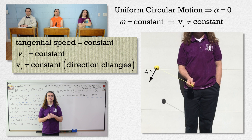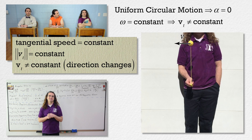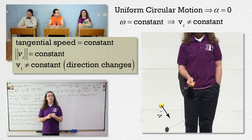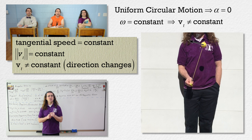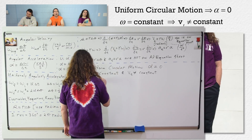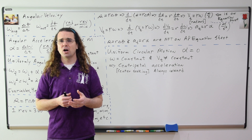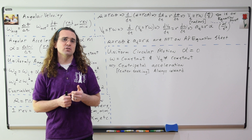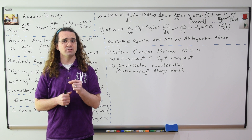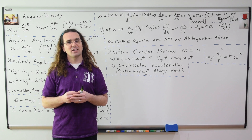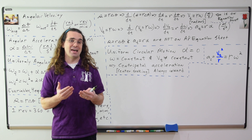Because the direction of the tangential velocity is not constant, the tangential velocity is changing. And because the tangential velocity is changing, there must be a linear acceleration causing that change in velocity. The linear acceleration which causes circular motion is called centripetal acceleration, and centripetal means center seeking. So the centripetal acceleration is directed in toward the center of the circle which the path of the object is describing.